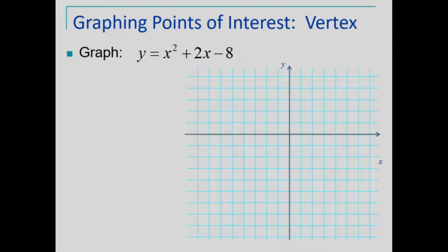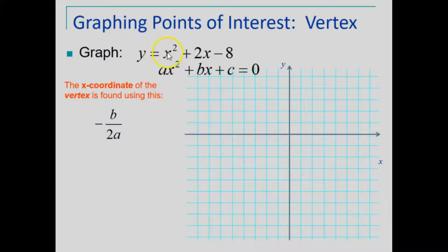To graph it, we'll start by finding the coordinates of the vertex. To find the x-coordinate of the vertex, we'll use the relationship negative b over 2a. A, as previously mentioned, is the leading coefficient. B is the coefficient of the linear term.